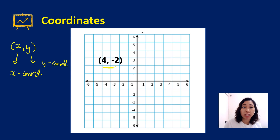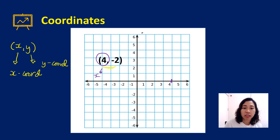For example, with the point (4, -2), we first locate 4 on the x-axis. Then we locate -2 on the y-axis. We draw a vertical line from x = 4 and a horizontal line from y = -2, and the point of intersection is your point (4, -2).